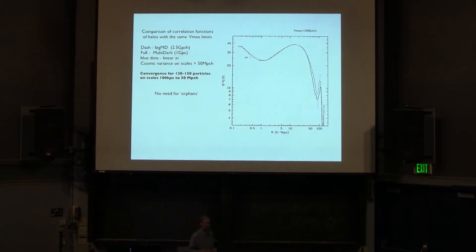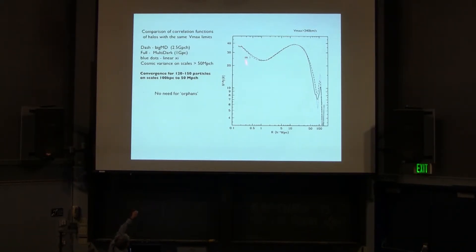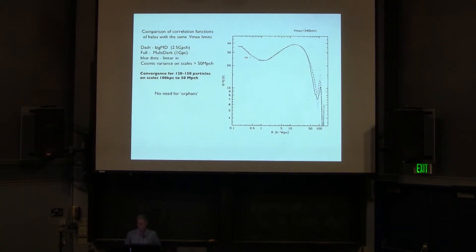Moving to bigger volumes, cosmic variance is much less of a problem. Comparing two large simulations, you don't see much difference. Going to larger scales around 50 megaparsec and above, cosmic variance plays a role and you see some deviations. But all the way from 100 kiloparsec to 50 megaparsec, there's no significant difference between them. Counting how many particles: about 150. So if you do simulations right — it's a whole pipeline, not just running the simulation, including halo-finding and tracking — you get much better convergence.